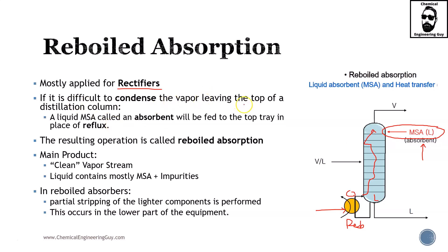It is difficult to condense the vapor leaving the top of a distillation column, so a liquid MSA called an absorbent will be fed to the top tray in place of the reflux. Remember, the reflux is for distillation, and here we have the MSA for reboil absorption. The resulting operation is called reboil absorption. The main product is the clean vapor or gas stream, and the liquid contains mostly the MSA plus the impurities removed from the feed. The feed can be both vapor or liquid.